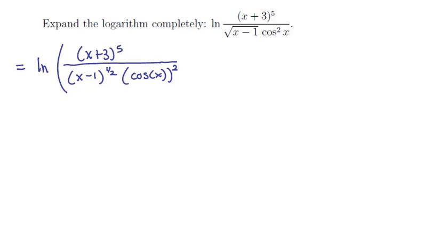There's my first bit of prep work, getting rid of the radicals and some abuses of notation. Notice we still have denominators, so let me rewrite this as a product instead of a quotient. This becomes ln of (x plus 3) to the 5, times (x minus 1) to the negative 1/2,